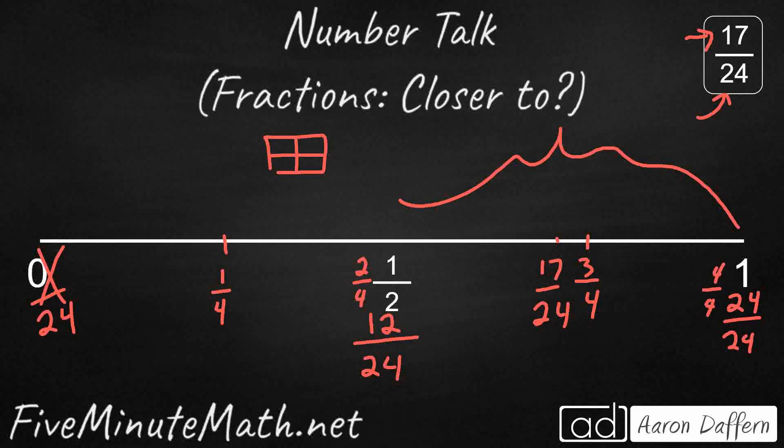So if I place my 17/24 correctly, I'm thinking it's going to be on the left side of my 3/4. But how do we know for sure? Well, we need this denominator. We need to change our 3/4 into 24ths.